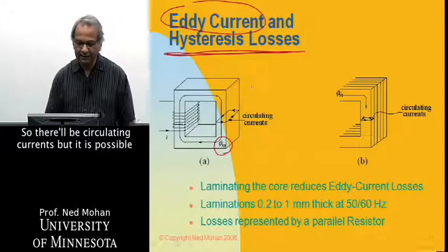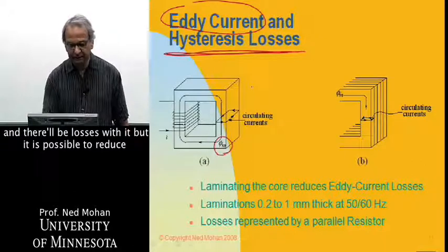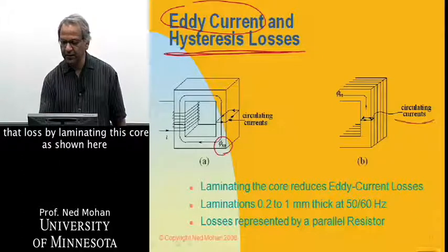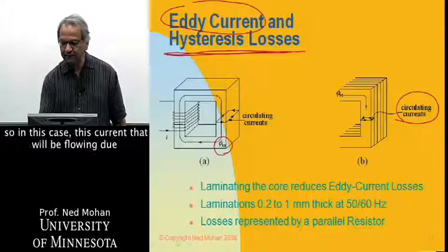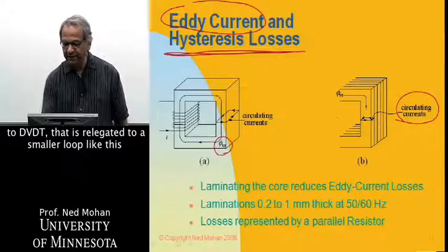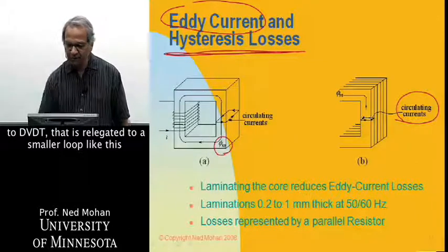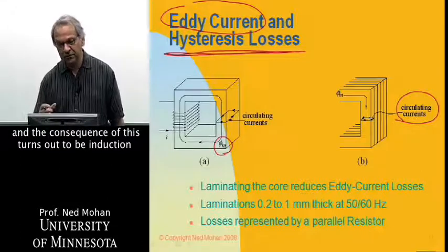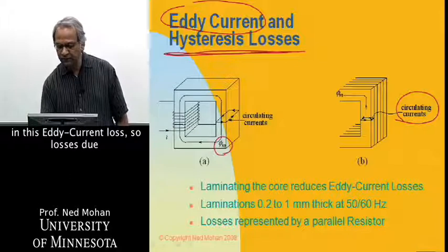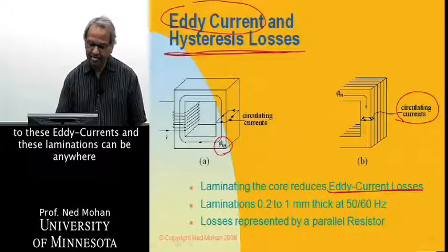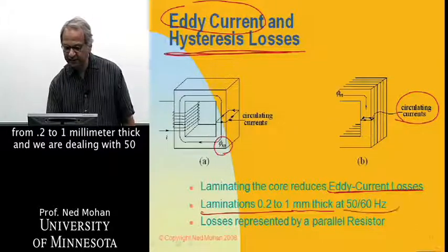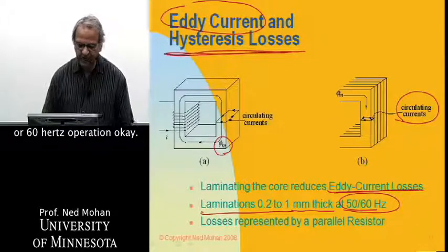So there will be circulating currents, and there will be losses with it, but it is possible to reduce that loss by laminating this core, as shown here. So in this case, this current that will be flowing due to dΦ/dt is relegated to a smaller loop like this. And the consequence of this turns out to be reduction in this eddy current loss. So our loss is due to these eddy currents. And these laminations can be anywhere from 0.2 to 1 millimeter thick when we are dealing with 50 or 60 hertz operation.